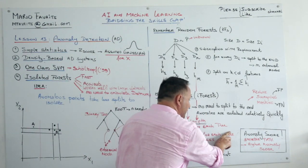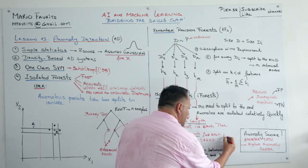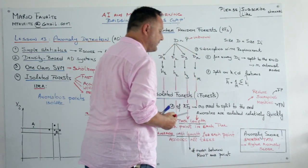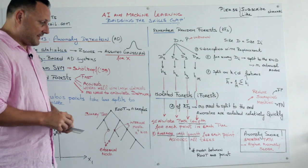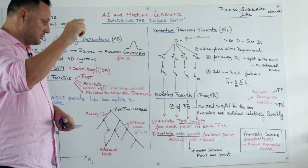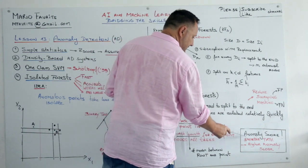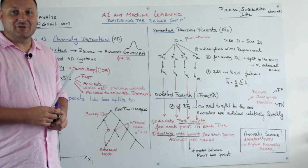It's not node, it's point. Across all trees. For each point across all trees. So the path length is the number of nodes between your root and your point. And the average path length will be a measure for your anomaly score.